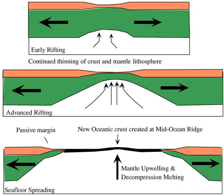A passive margin is the transition between oceanic and continental lithosphere that is not an active plate margin. A passive margin forms by sedimentation above an ancient rift, now marked by transitional lithosphere. Continental rifting creates new ocean basins. Eventually the continental rift forms a mid-ocean ridge and the locus of extension moves away from the continent-ocean boundary. The transition between the continental and oceanic lithosphere that was originally created by rifting is known as a passive margin.